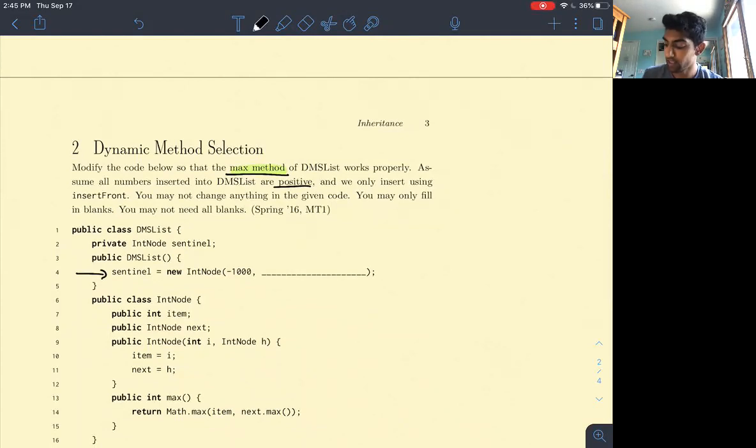It's probably some node in a linked list whose item is negative 1,000 and as we know sentinel nodes, that item shouldn't matter, except we don't know what sentinel.next is. So sentinel.next can be whatever we decide it to be, right? And it looks like it should probably be another instance of the int node class.